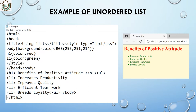After closing the style and head tags, I start the body tag and use h1 for the heading — I write 'Benefits of Positive Identity'. Then I start the ul unordered list. Inside it I use li tags for: 'Increase productivity', 'Improves quality', 'Efficient teamwork', and 'Breeds loyalty'. Then I close the ul tag, then the body and html tags, and you get this output.